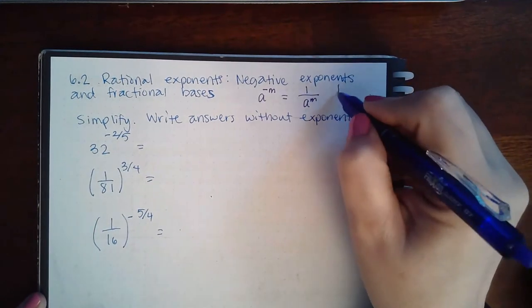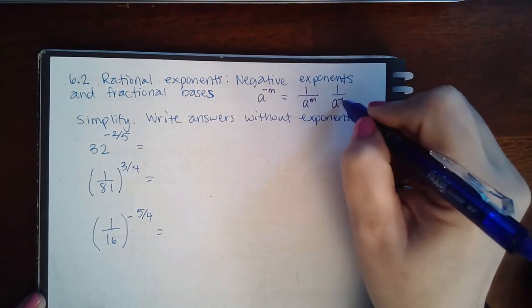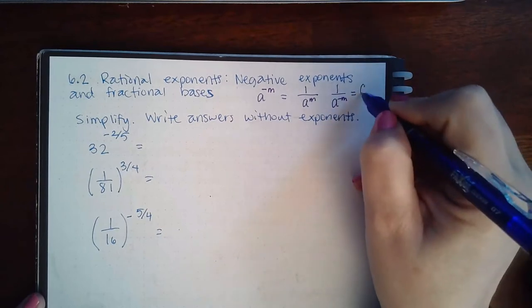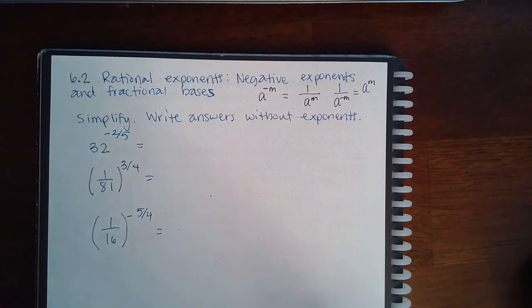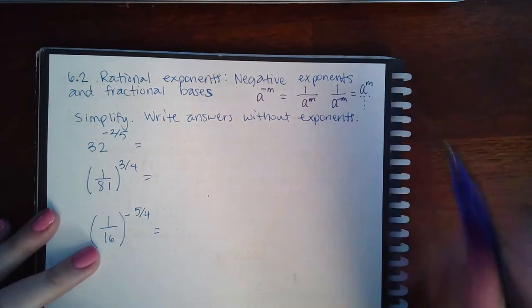If you have something that's in the denominator that has a negative exponent, it will move up to the numerator to become positive. And since it's over 1, we don't usually write that, we just say it's a whole number.